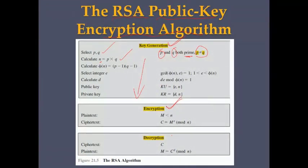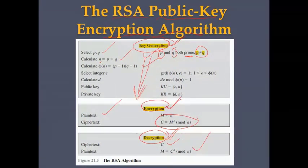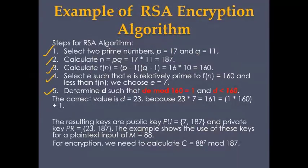After key generation, we use the key to encrypt any message. The plain message is encrypted using the key and becomes cipher text. Using the same key, we can decrypt the message back to normal text. That is the whole process of RSA in different steps.